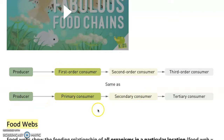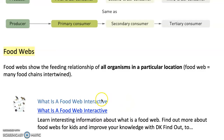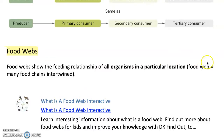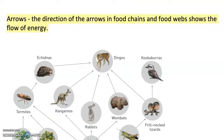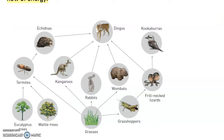In a food chain, producers are plants, primary consumers will be herbivores, and then you get into carnivores and omnivores as you go up the food chain. Food webs are more complex than a food chain — they show a lot more of the feeding relationships in a particular location. A food web is made up of many different food chains, showing the feeding relationships of all organisms in that location. The arrows in food webs and food chains are really important because they show the flow of energy.